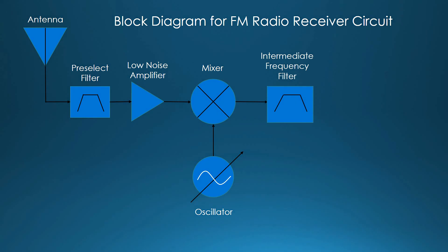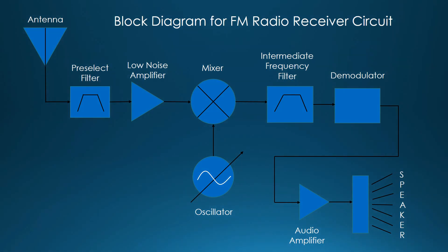We have the intermediate frequency filter. It basically down converts the spectrum of frequency modulation band. The demodulator helps in converting the electrical signals to audio signals. And at the end we have the audio amplifier. The demodulated signal is passed on to the audio amplifier and then to the speaker.